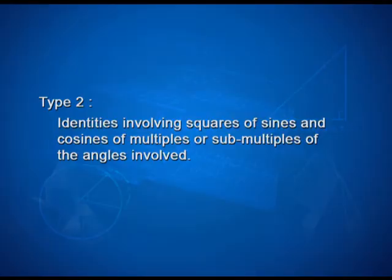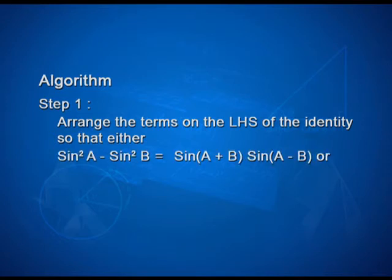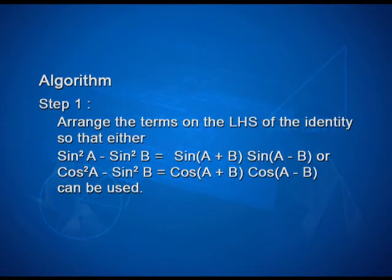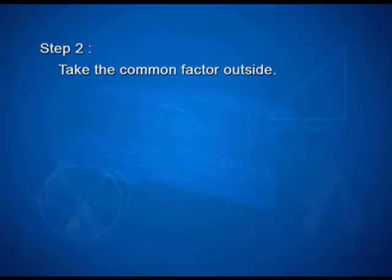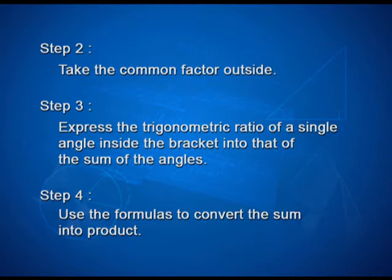Now let us take up Type 2 identities: identities involving squares of sines and cosines. The algorithm is as follows. Step 1: arrange terms on the LHS so that sin²A minus sin²B equals sin(A+B) sin(A-B), or cos²A minus sin²B equals cos(A+B) cos(A-B) can be used. Step 2: take the common factor outside. Step 3: express the trigonometric ratio of the single angle inside the bracket in terms of the sum of angles. Step 4: use the formula to convert the sum into product.